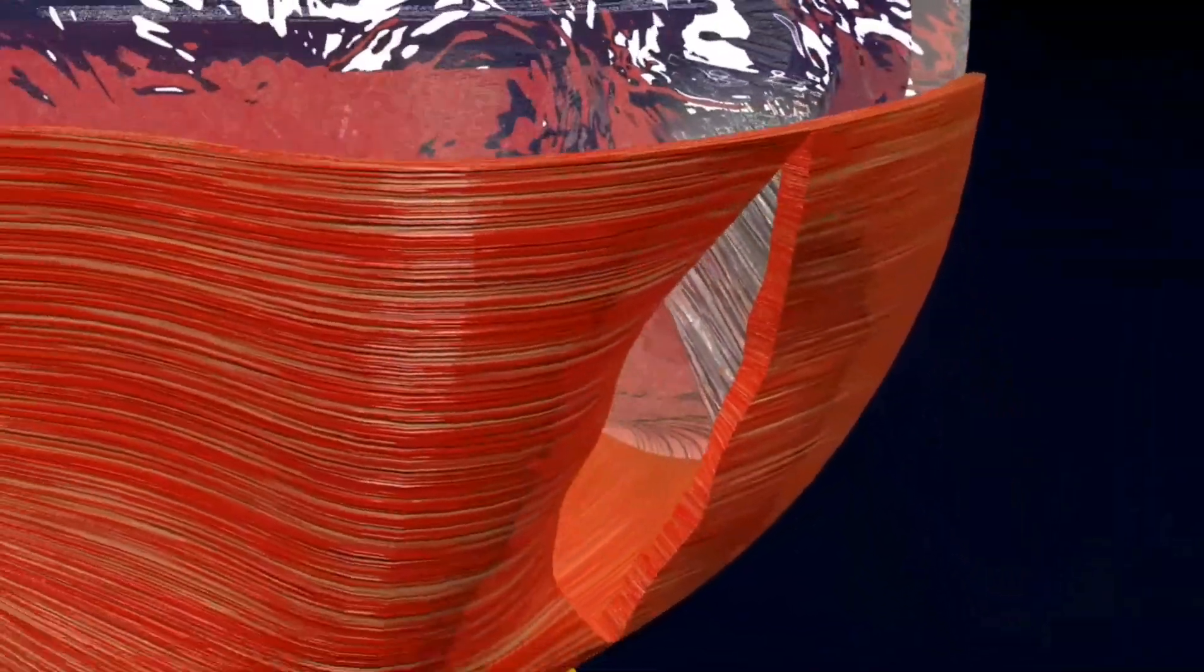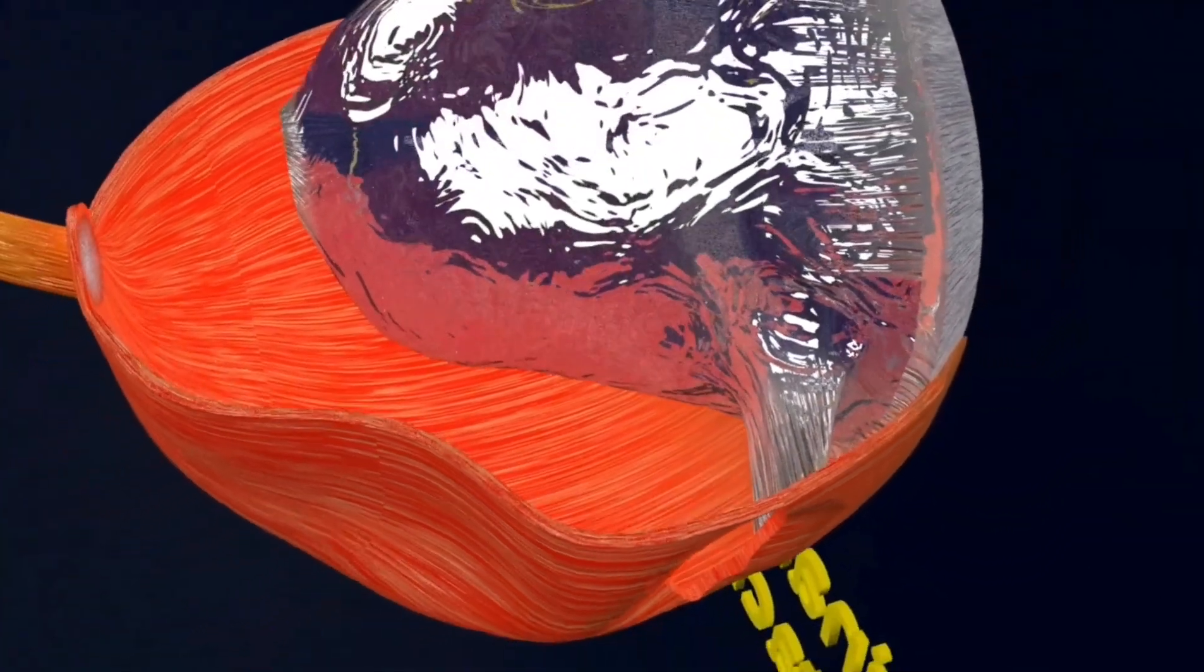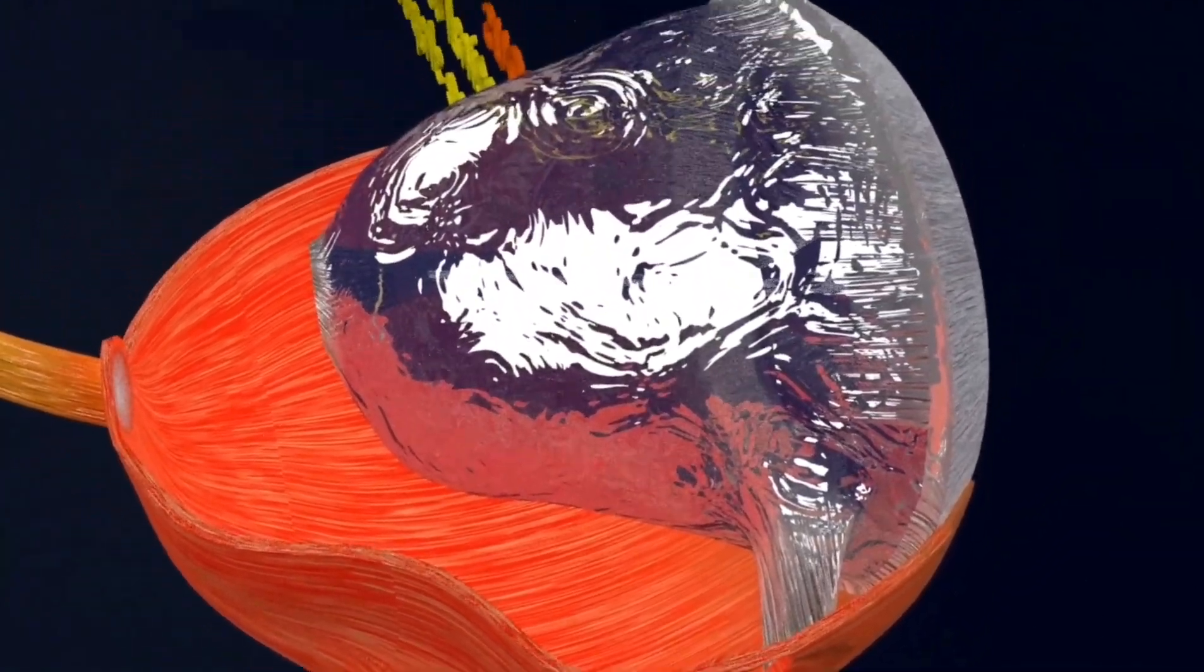The sudden appearance of many floaters or tiny specks that seem to drift through your field of vision are some causes of rhegmatogenous retinal detachment, first type.